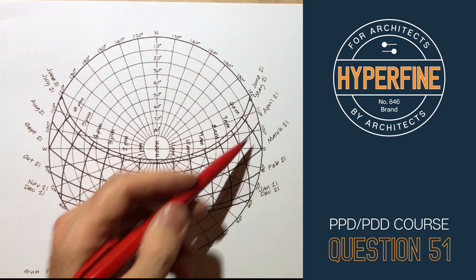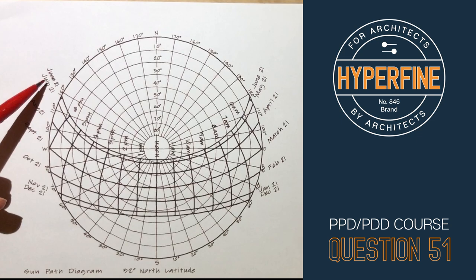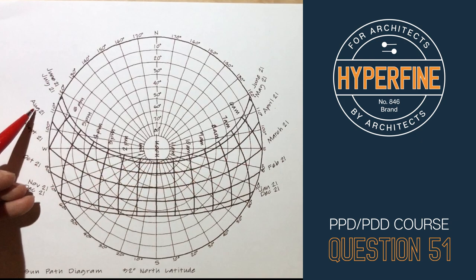So these dark black lines that are going left to right in a curve are the months, so obviously you can see that they're labeled here. July and May share the same line because the Sun will be in more or less the same position, same thing with August and April.